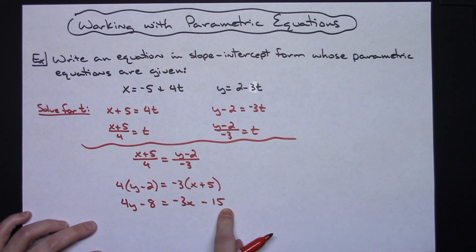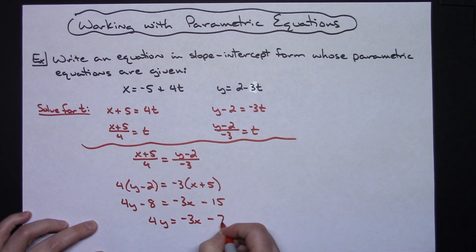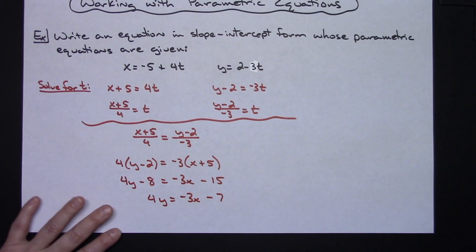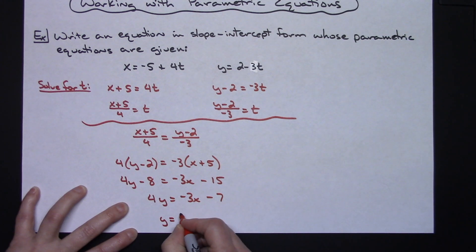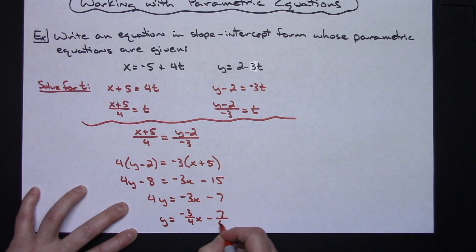I can add 8 to both sides of the equation. I'll have 4y = -3x - 7. And then I can divide through by 4. So I'll have y = (-3/4)x - 7/4.